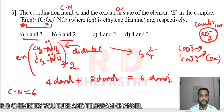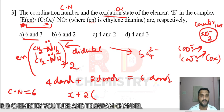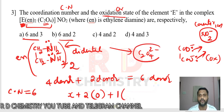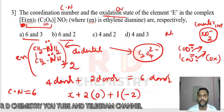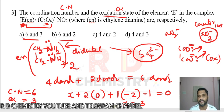Now for the oxidation number of element E, let it be X. Two EN ligands are neutral (zero charge). One oxalato: C2O4²⁻ has two negative charges, so each oxalate contributes −2. Nitrite NO2⁻ is outside as counter ion with minus one charge. Total equals zero: X + 2(0) + 1(−2) + 1(−1) = 0, giving X = 3. Oxidation number equals 3. So the answer is option A — coordination number 6 and oxidation number 3.